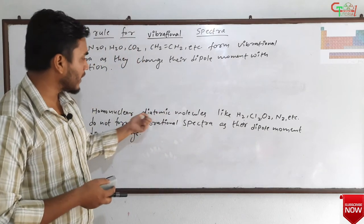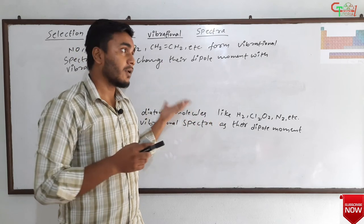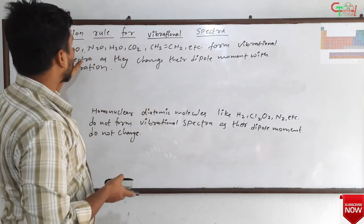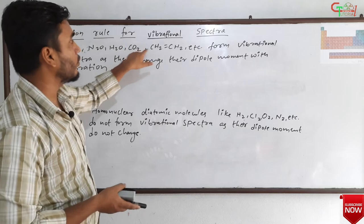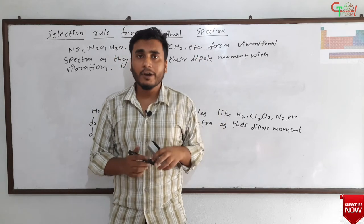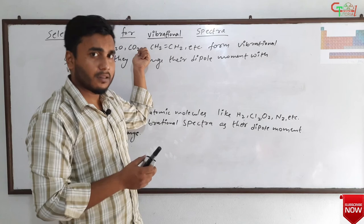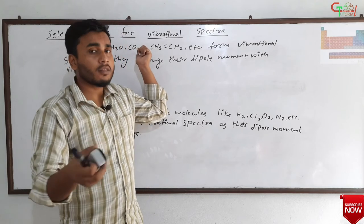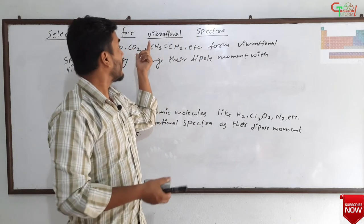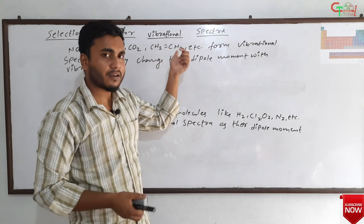To summarize: homonuclear diatomic molecules do not form vibrational spectra, and they do not form rotational spectra either, because they do not have a permanent dipole moment. On the other hand, molecules like NO, H₂O, and CO₂ — CO₂ does not form rotational spectra because it lacks a permanent dipole moment, but it forms vibrational spectra (infrared spectra) because its dipole moment changes on vibration.